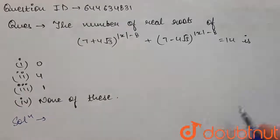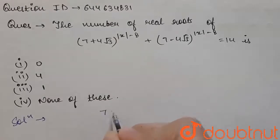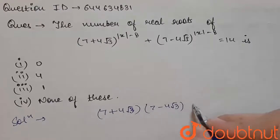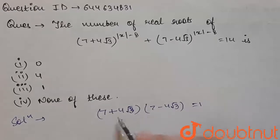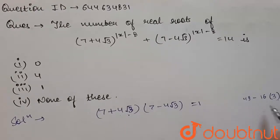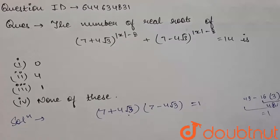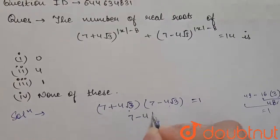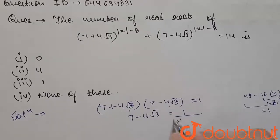For solving this question, we are going to use a trick. First, let's see that (7 + 4√3) multiplied by (7 − 4√3) gives us 1. We can check: 7² = 49, minus 4² × 3 = 48, so 49 − 48 = 1. Therefore, (7 + 4√3)(7 − 4√3) = 1, which means we can write 7 − 4√3 as 1 divided by (7 + 4√3).